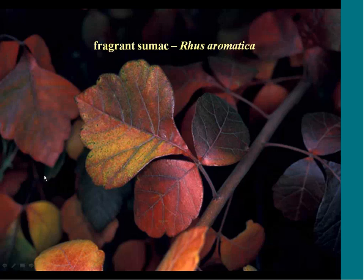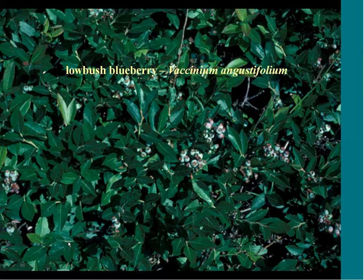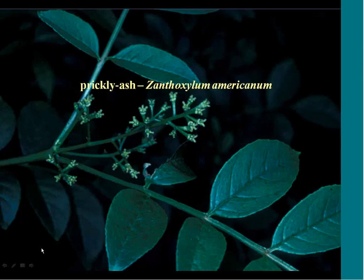Winged sumac is beautiful in fall color and fruit — it's dioecious. Lowbush blueberry is great for a real dry, hot site. Prickly ash is also worth mentioning.